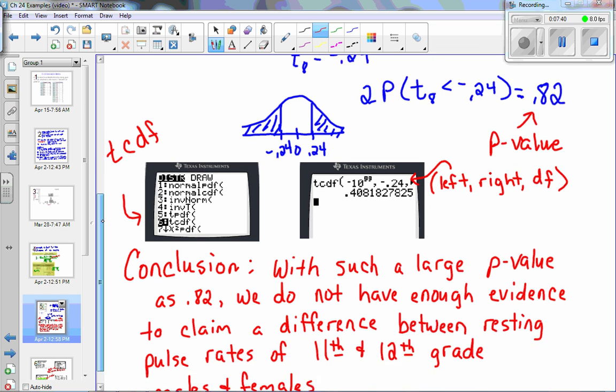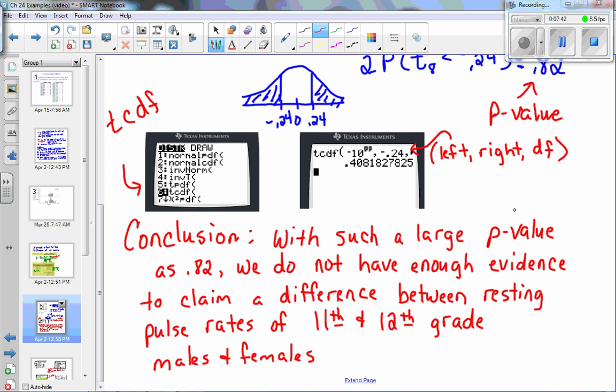Well that's a really high p-value. So my conclusion, with such a large p-value as 0.82, we do not have enough evidence to claim a difference between resting pulse rates of 11th and 12th grade males and females.